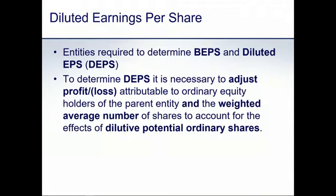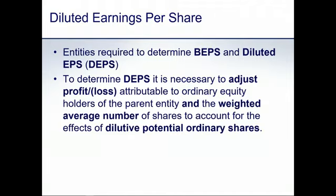Turning to diluted earnings per share — entities are required to determine both basic and diluted EPS. To determine diluted EPS, it is necessary to adjust both the profit or loss attributable to ordinary equity holders used in basic EPS and the weighted average number of shares. In other words, we potentially adjust both the numerator and the denominator in moving from basic EPS to diluted EPS. We'll look at the earnings element and the share component in turn.